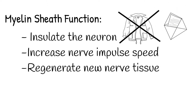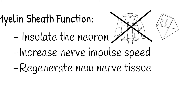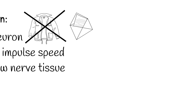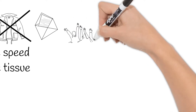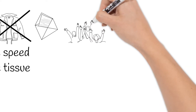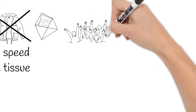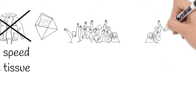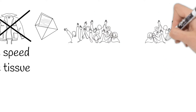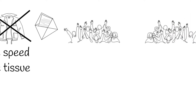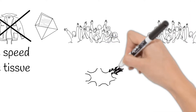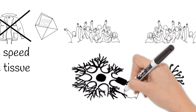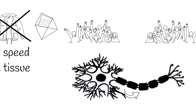Messages travel as an impulse through the neuron. It's like a baseball crowd doing the wave. If sections of the seats are empty, the wave will get to the end faster as it skips over those empty sections. An impulse is able to skip over the myelinated sections of the axon, helping the messages get where they need to go faster.